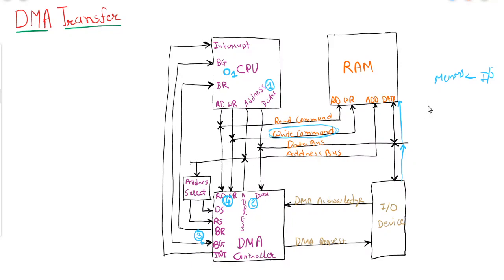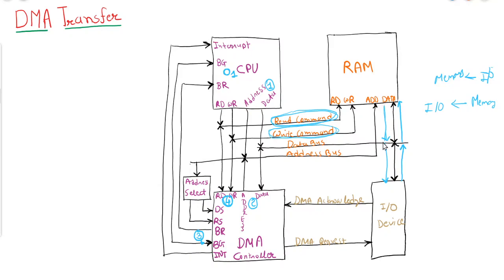In the reverse case, if we want to transfer data from memory to an IO device, the RAM will put data into the data bus and it will be received by the IO device. The read control will be enabled — whenever read control is enabled, the RAM will read the data and place it into the data bus, and from there it will be transferred to the IO device.